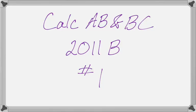Okay, this is going to be number one from the Calc AB and BC 2011 Form B exams. You're kind of working with a rate the entire time. It says a cylindrical can of radius 10 millimeters is used to measure rainfall in Stormville.